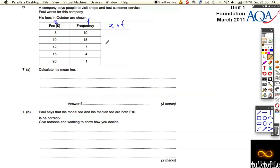Well, the first thing to do is to add up his frequency. That's always the first thing to do. So the total comes out as 40. So he did 40 different visits.